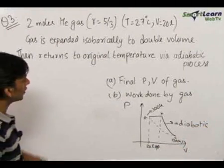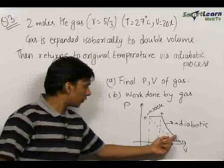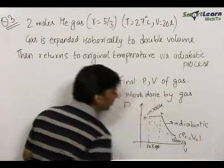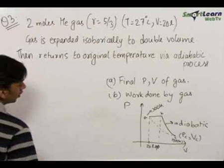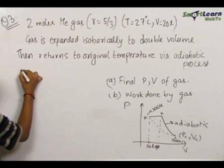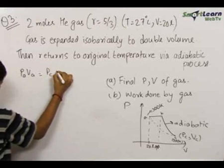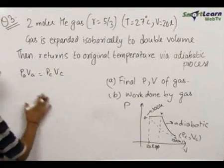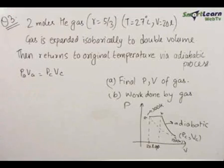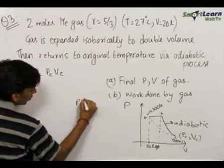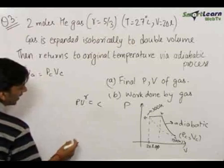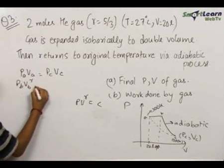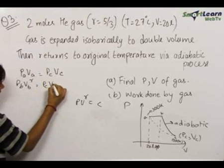We now need to find out the final pressure and volume of the gas — P_C and V_C. For that, let us first write the equation P_A × V_A = P_C × V_C. This is true because A to C is an isotherm, therefore P_A × V_A = P_C × V_C. For the adiabatic process we know that P × V^γ = constant, therefore P_B × V_B^γ = P_C × V_C^γ.